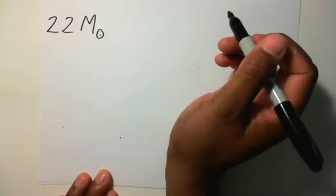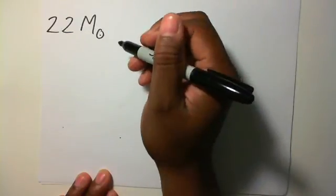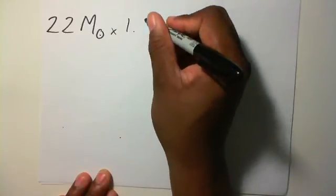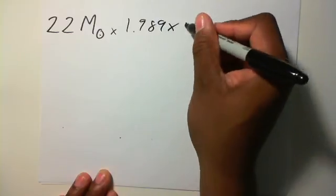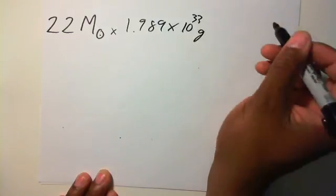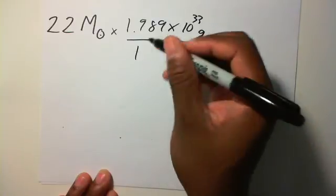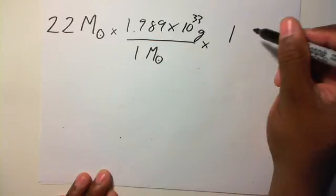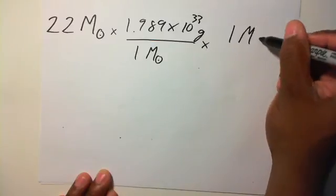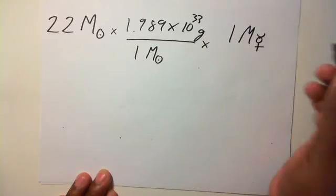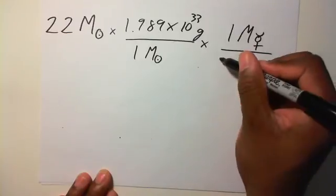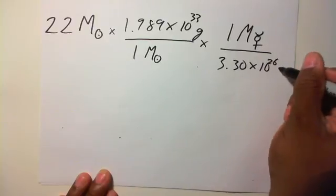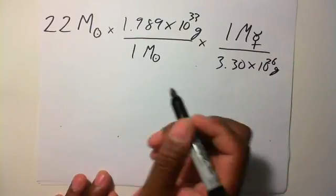And you want to change it into mercury masses. I know that there are 1.989 times 10 to the 33 grams in one solar mass. And I know within one mercurian mass, there are 3.30 times 10 to the 26 grams.